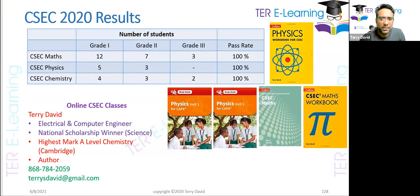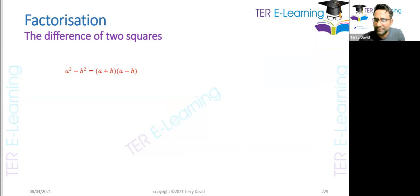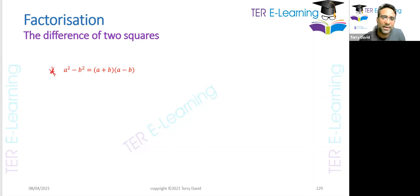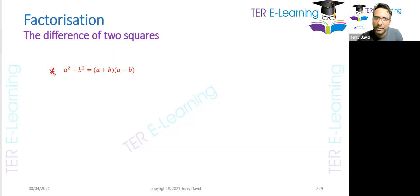So let's take a look at this first question. The first thing we have to remember when it comes to factorizing the difference of two squares is this: a squared minus b squared can be written as (a plus b) in brackets, multiplied by (a minus b) in brackets. Now let me show you why that is true.